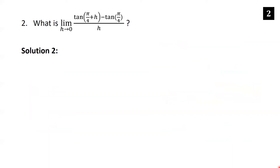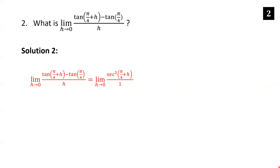The second, quicker method is L'Hôpital's rule. The limit is of the form 0/0: plugging h=0 gives tan(π/4) minus tan(π/4) = 0 on top and 0 on the bottom. Applying L'Hôpital's, we differentiate the numerator to get sec²(π/4 + h) and the denominator to get 1. Plugging in h=0 gives sec²(π/4), which equals (√2)² = 2.